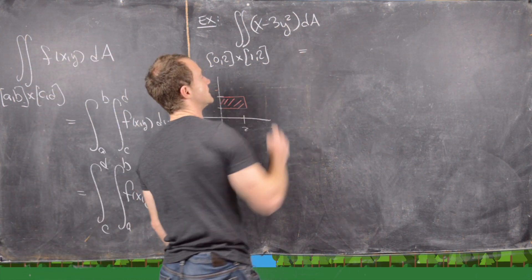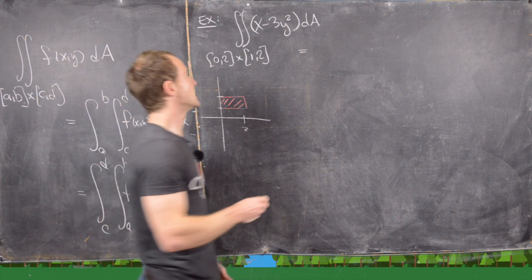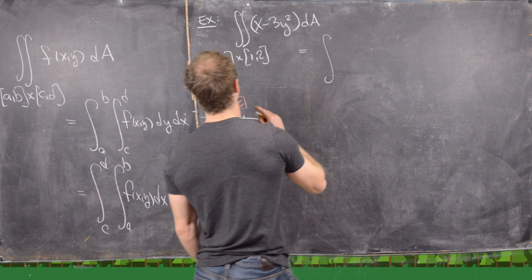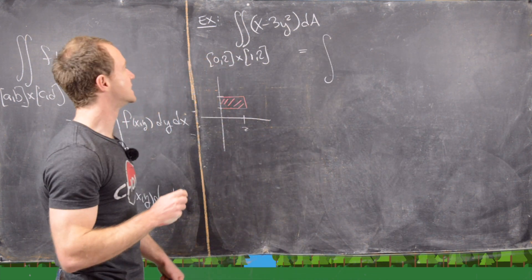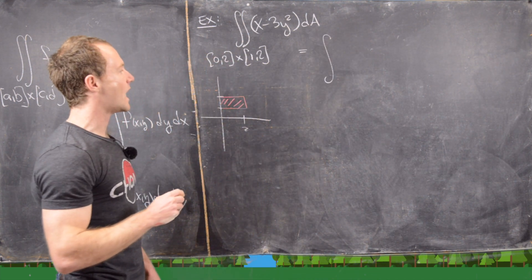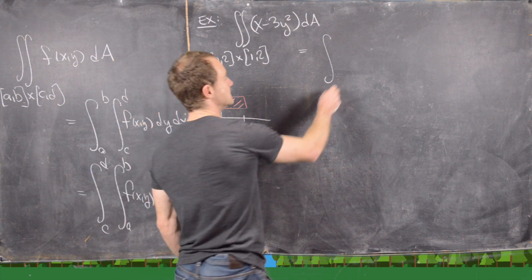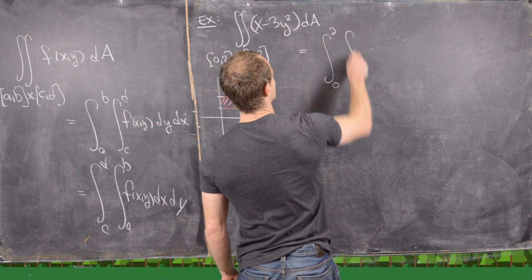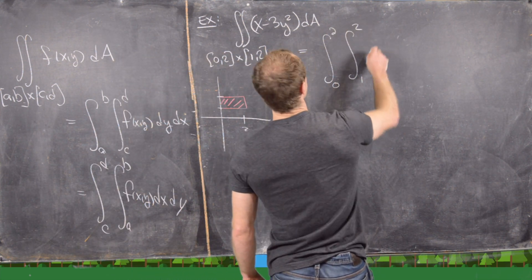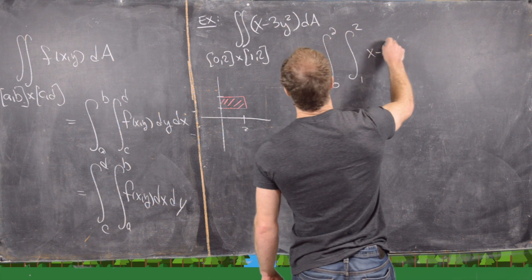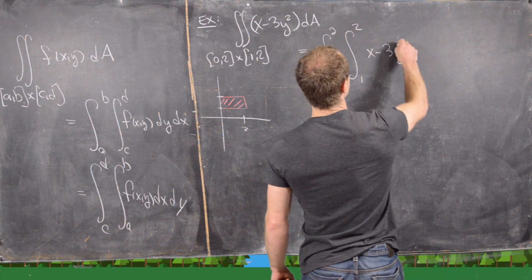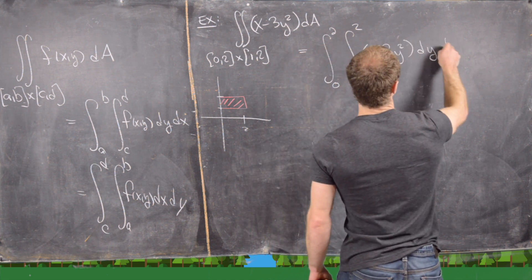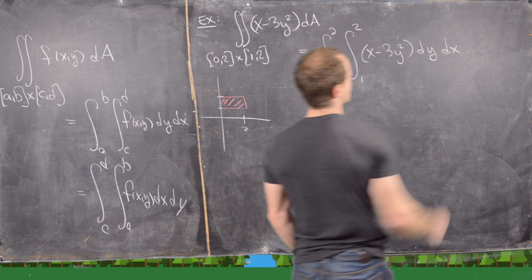We can turn this into an iterated integral. Let's put the y component on the inside, so we'll go from 0 to 2 on the outside, 1 to 2 on the inside, of x minus 3y squared, and then we'll do dy first and then dx second.